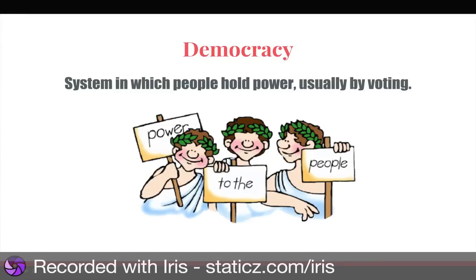Our last type is a democracy — a system in which people hold power, usually by voting. In democracies, the government is not above the law; the government also has to obey the law. Constitutions are living and working, which means they can be changed based on what's going on in the country, and the people expect the government to honor its social contract.